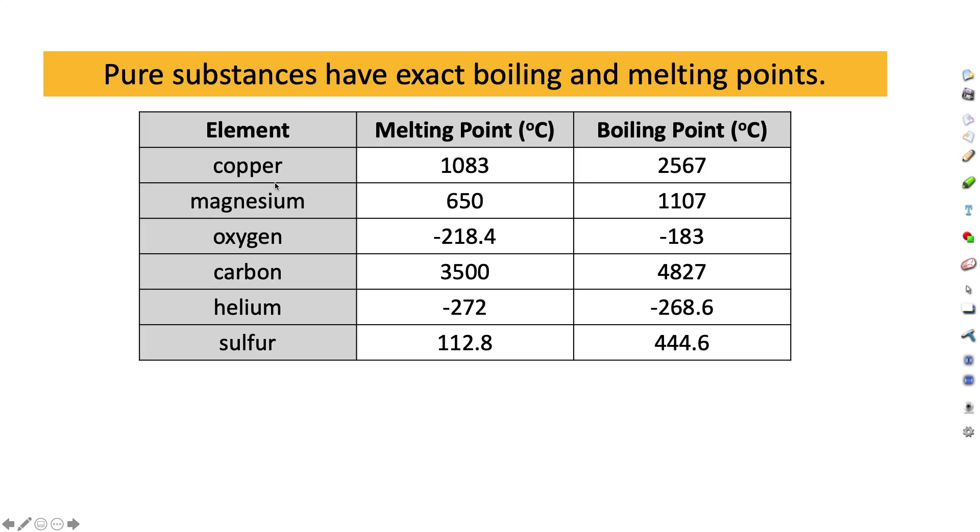So if you had a lump of copper, for example, you would know that if that was a pure substance it would melt at exactly 1083 degrees, and if you heated it up further, copper would boil and turn into a gas at 2567 degrees exactly.